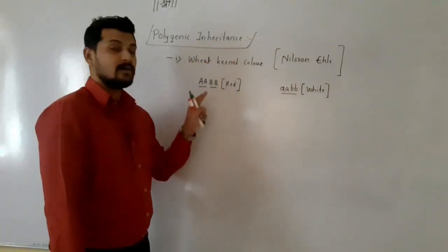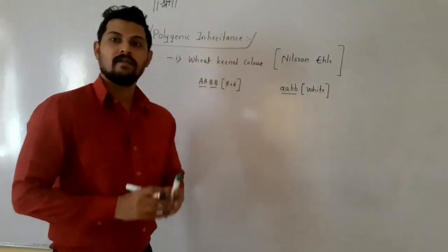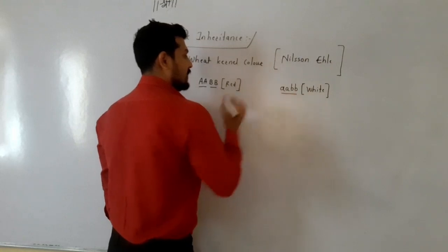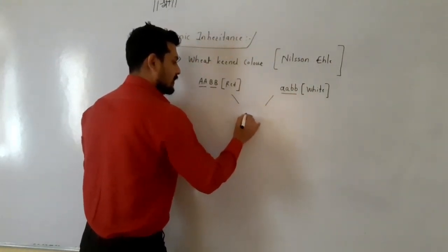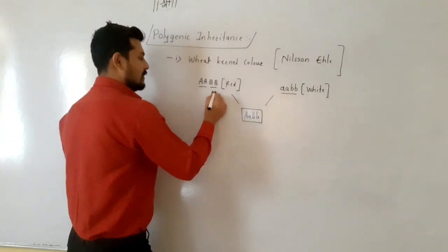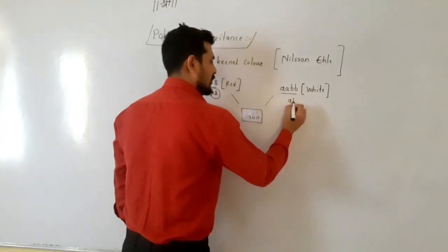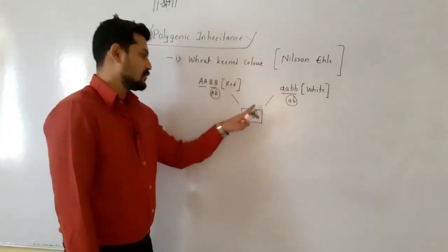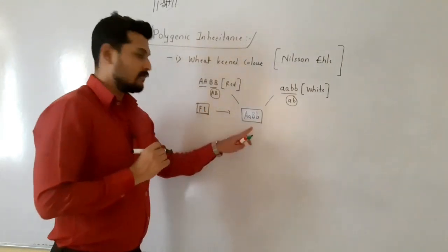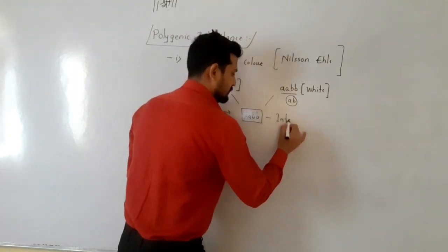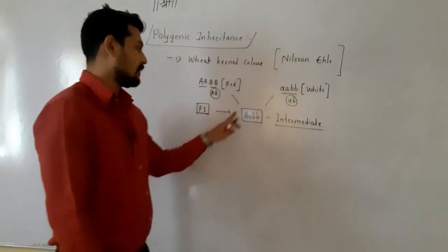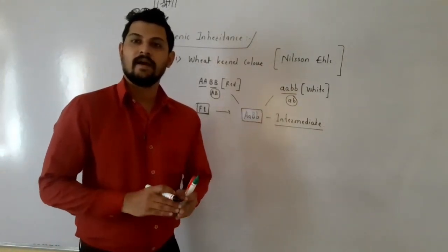Here the two genes A and B decide the red kernel color. If a pure line dominant (AABB) is crossed with the pure line recessive (aabb), the F1 offspring produced are AaBb, because AABB produces AB gametes and aabb produces ab gametes. This F1 offspring will have an intermediate kernel color between red and white.